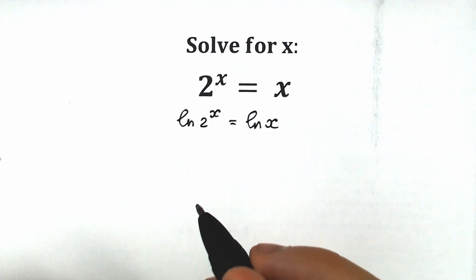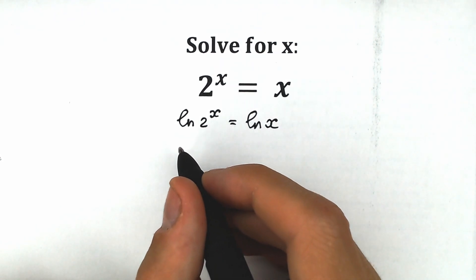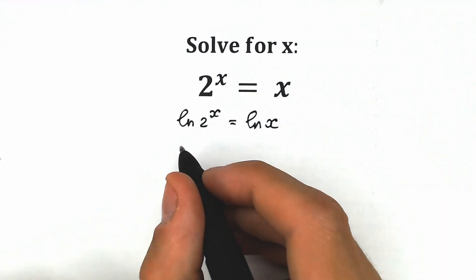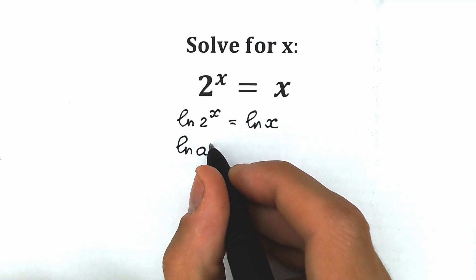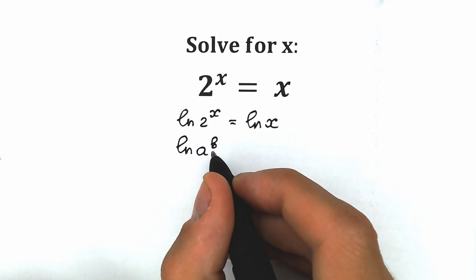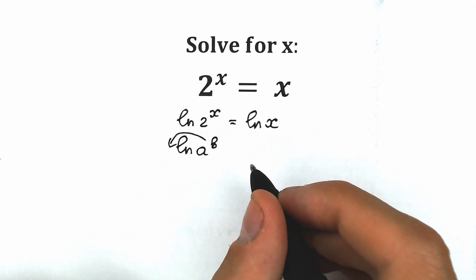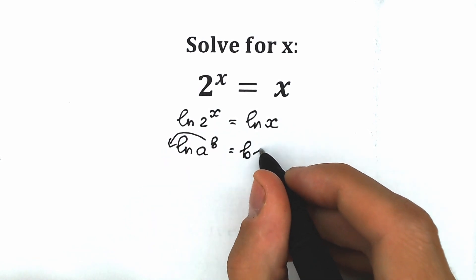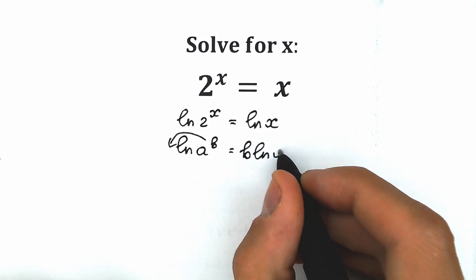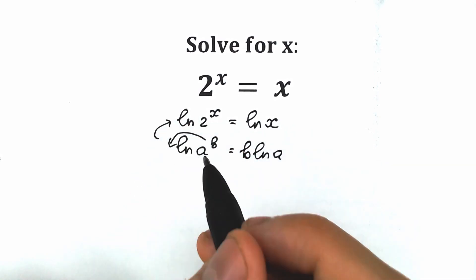Right now we need to know a really great log property. If you have natural log of a to the power b, this b will come down and as a result we have b times natural log a. Let's apply this property right here.